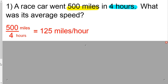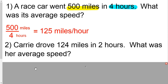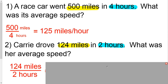When we take a look at another problem, we see that Carrie drove 124 miles in 2 hours. So 124 miles, and she did it in 2 hours. So 124 miles divided by 2 hours is 62 miles per hour.